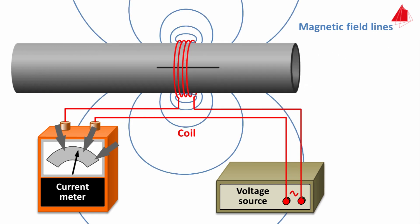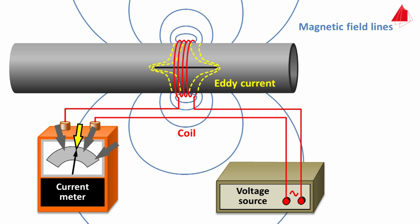When a defect — for example a crack — comes into the path of the eddy current, the current consumption of the coil drops. The eddy current has to flow around the defect; the path of the eddy current is now longer and the electrical resistance of the eddy current circuit is larger. This leads to a reduced magnitude and a reduced magnetic field of the eddy current, so the self-inductance of the coil is increased and the current consumption decreased.